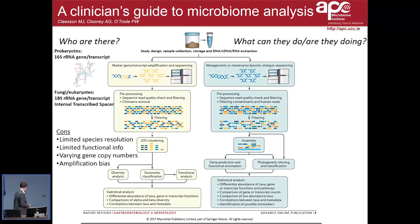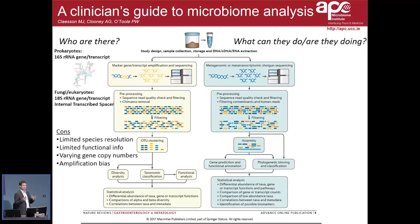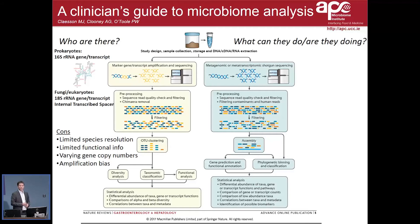With 16S you have limited species resolution — we have some tools to go down to species level, but for quite a big proportion of amplicon reads that may not be possible. You obviously have limited functional information because you are only targeting that marker gene. There is also an issue with varying gene copy numbers: the 16S gene may exist in one, two, three, or up to seven or eight copies, which affects abundance estimates. And there is amplification bias — different primer pairs will give you different answers.